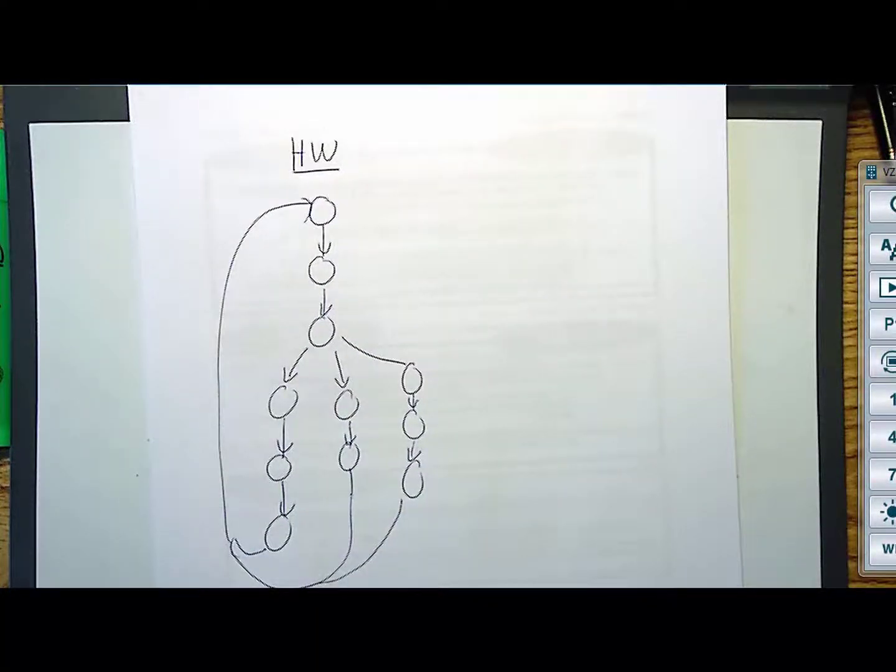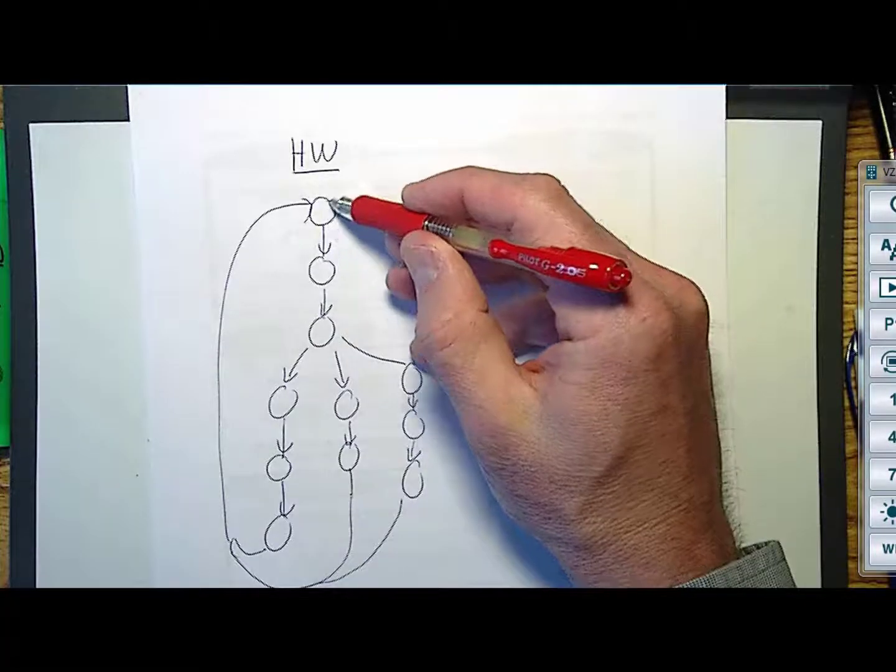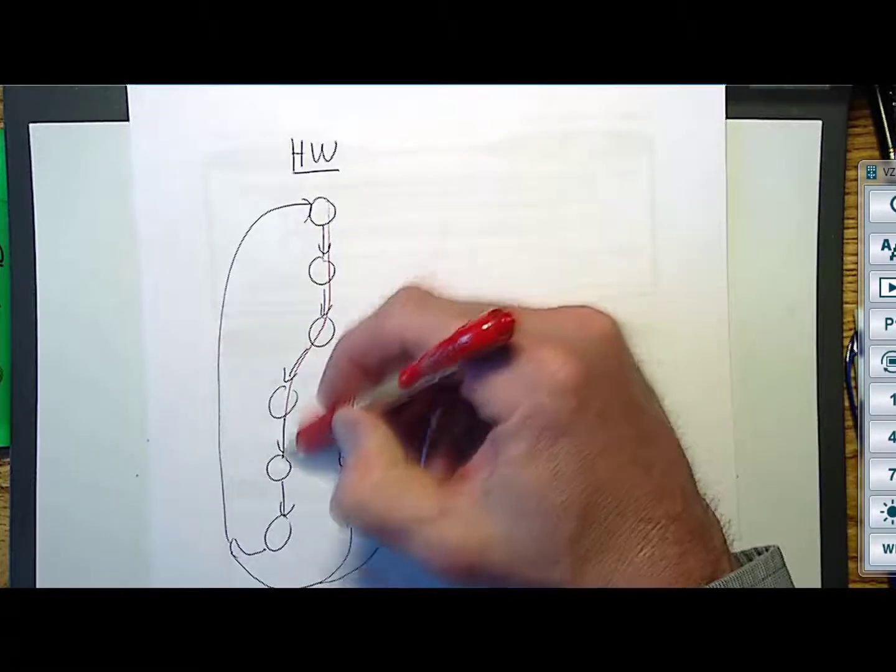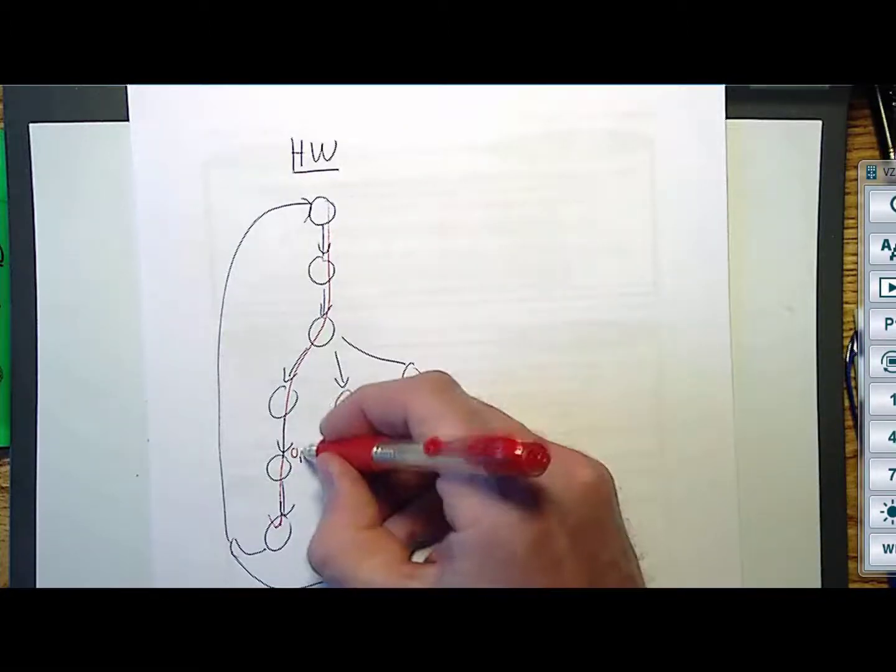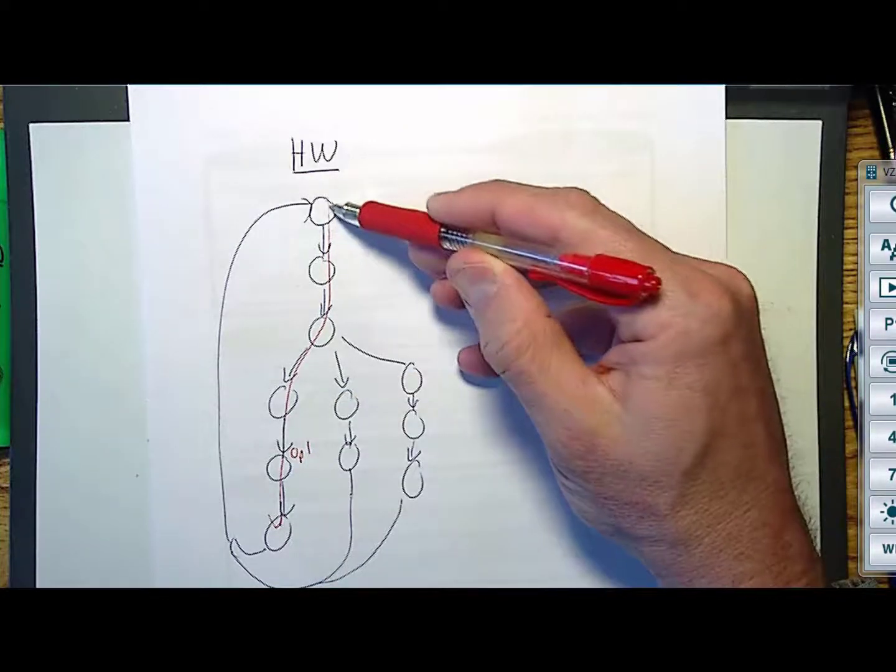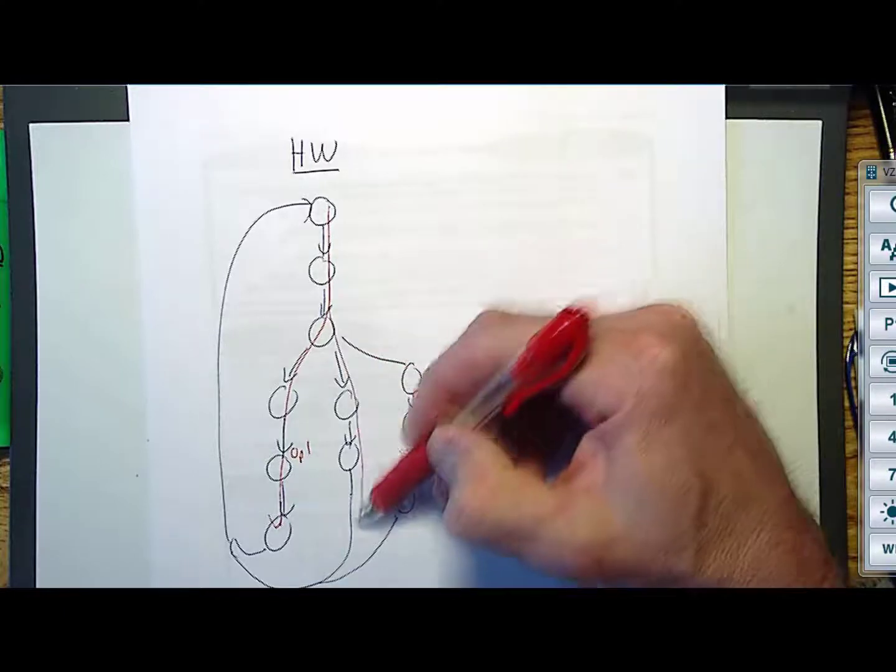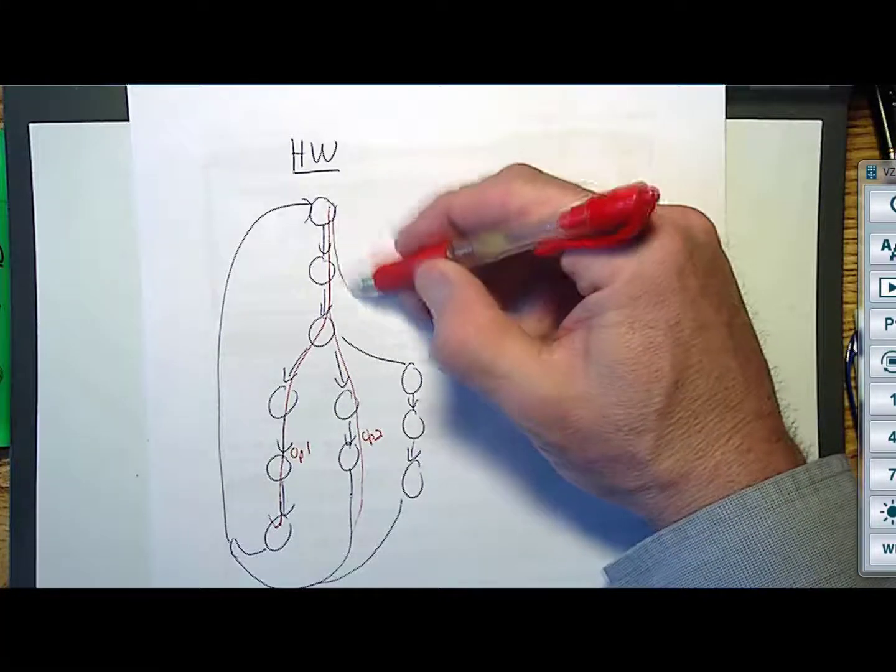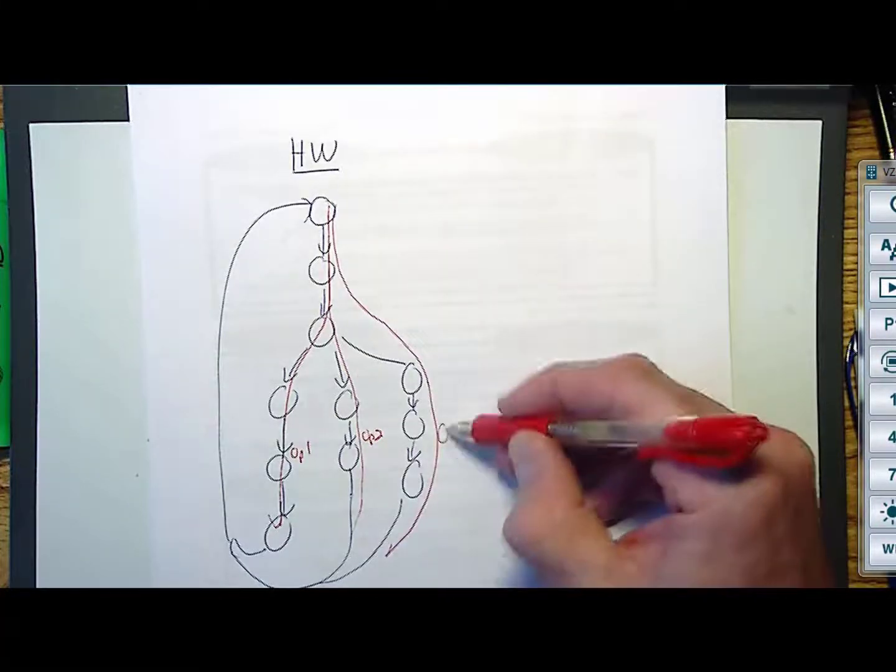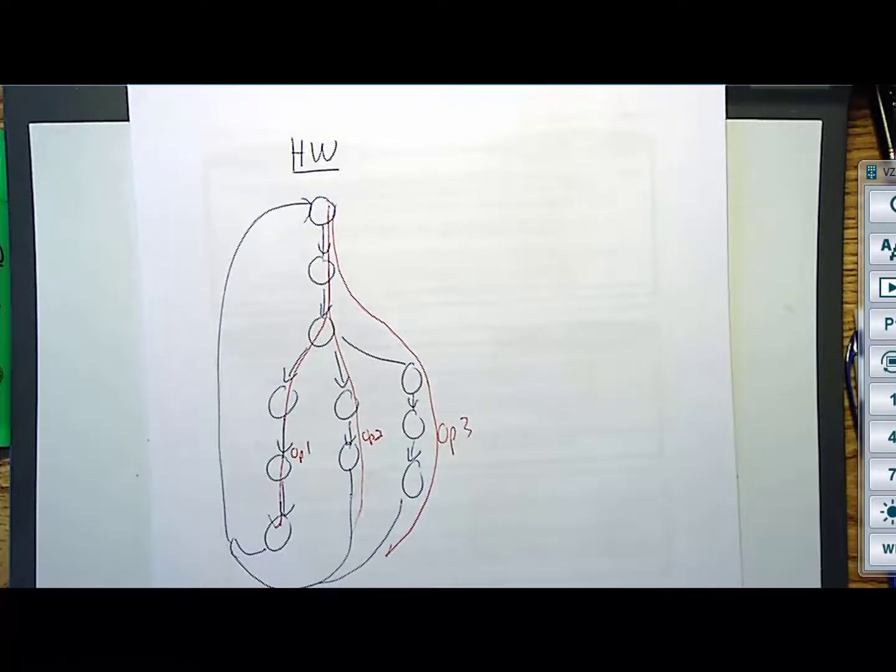So you have this state machine, and let's just say that it can do three operations. An operation is essentially one path from start through one of these paths. So that would be operation one, op one. And then another one would be you come through this path, a second operation. This is hardware. And another one might be this guy right here, which is op three. You've created a piece of hardware that can do three operations.